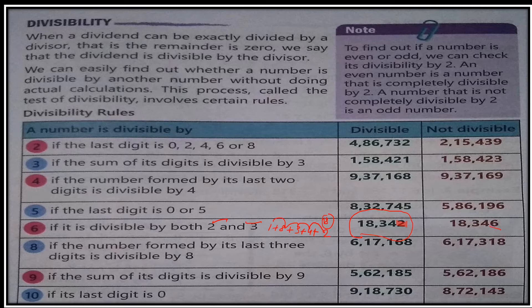Now check this number — the last digit is 6, so it is divisible by 2. Now let's check whether it is divisible by 3. We find the sum: 1+8+3+4+6 = 22. Since 22 is not divisible by 3, this number is not divisible by 6. The number can be divisible by 2, but not by 3, so it is not divisible by 6.